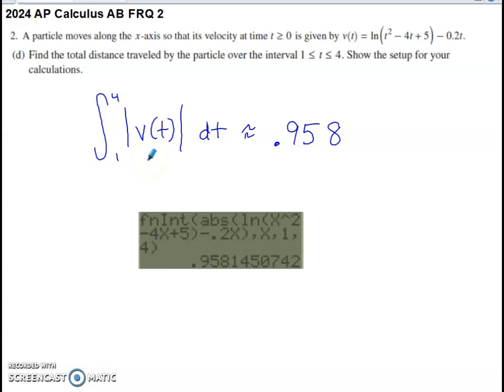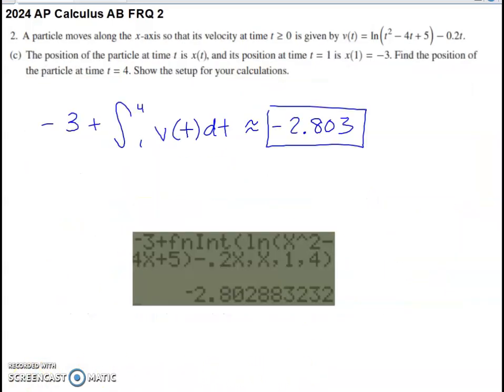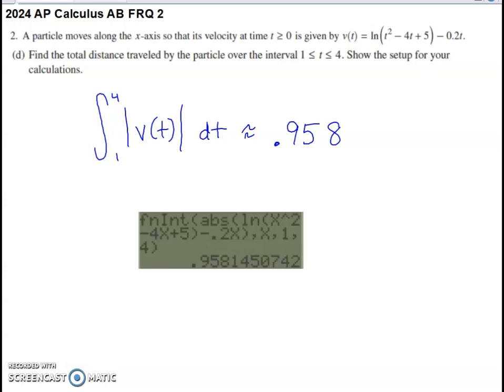If we take the absolute value of velocity, what that does to this graph back in Part A, this portion that's below the x-axis is going to get reflected up above the x-axis looking something like this. We only want to accumulate distance traveled when we're trying to do a total distance calculation. So if we do the integral of speed or the absolute value of velocity or any of those velocities that were really negative get reflected up to positive velocities,